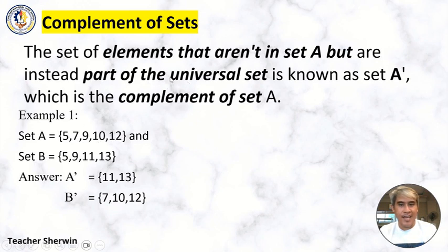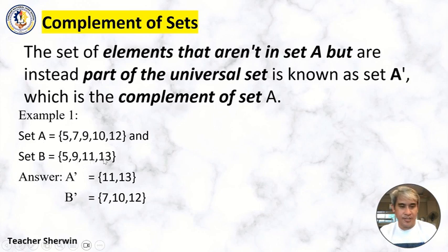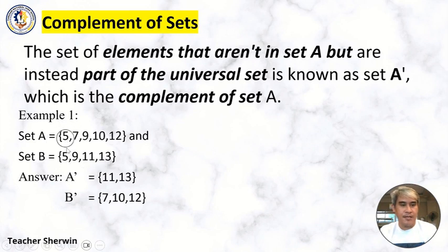All you need to do is get the elements that aren't in the set. If you compare Set A to Set B, we have 5 and 9 in common, but Set A has no 11 and 13. For the complement of B, compare Set B to Set A — 5 and 9 are in Set A, but there is no 7, 10, and 12 in Set B. So the complement of B = {7, 10, 12}.